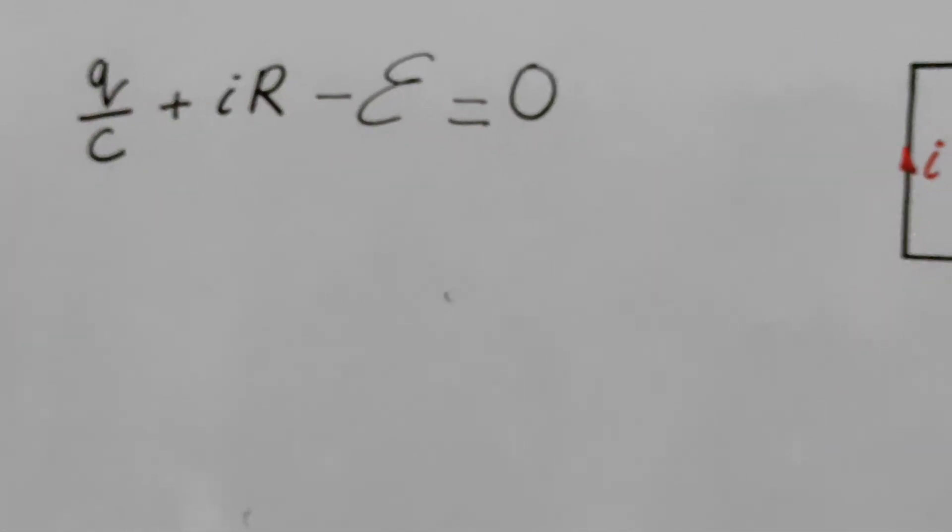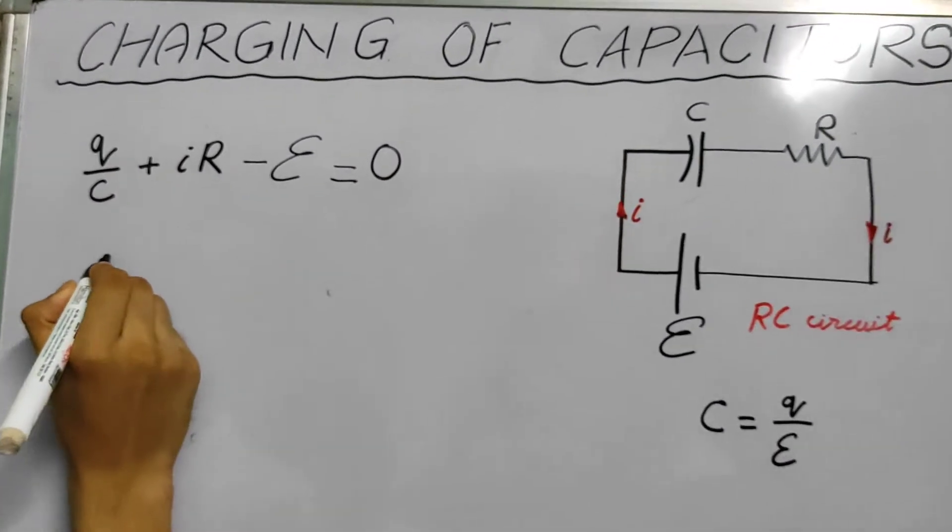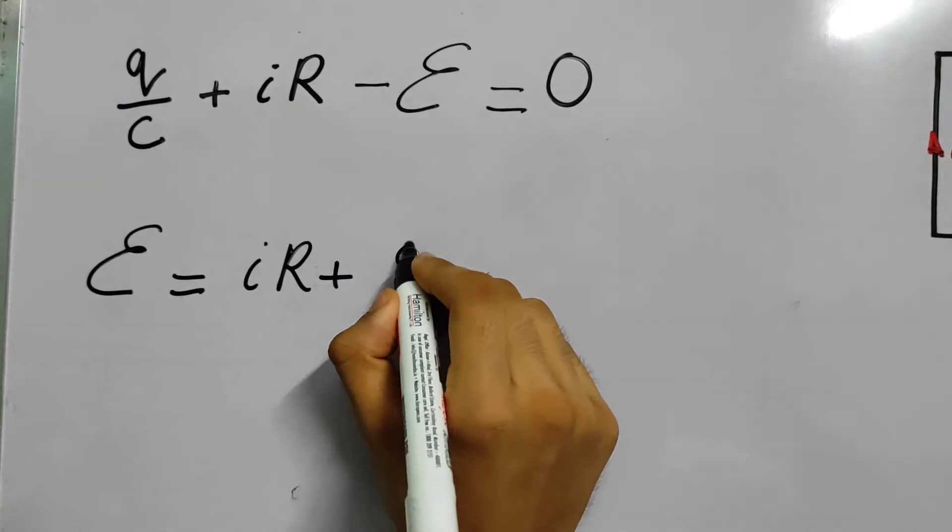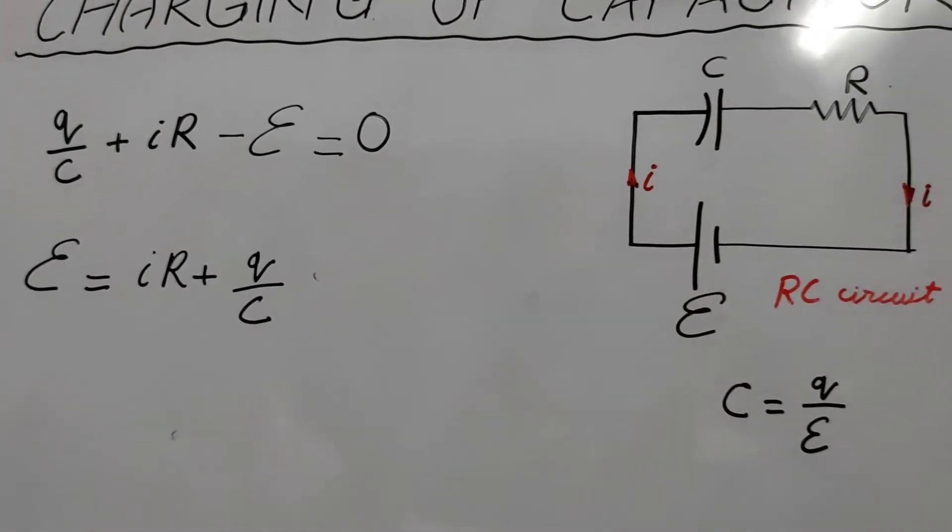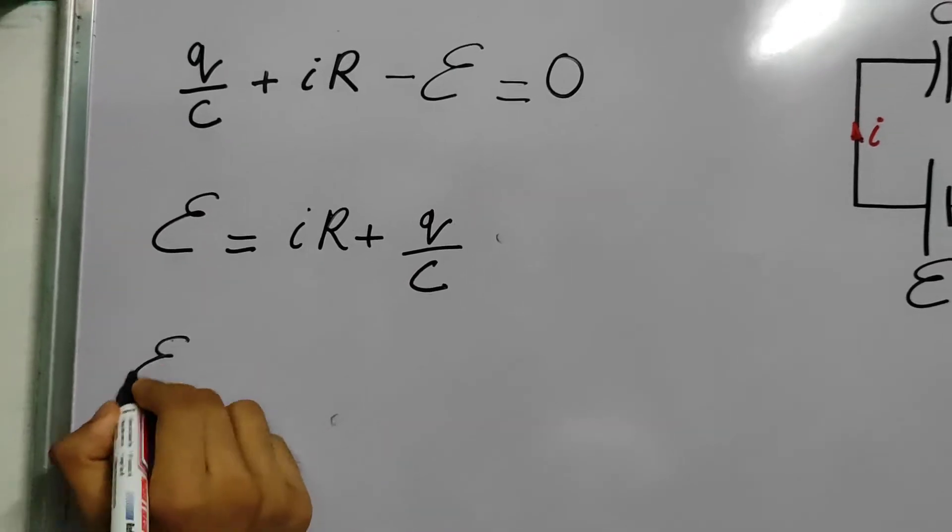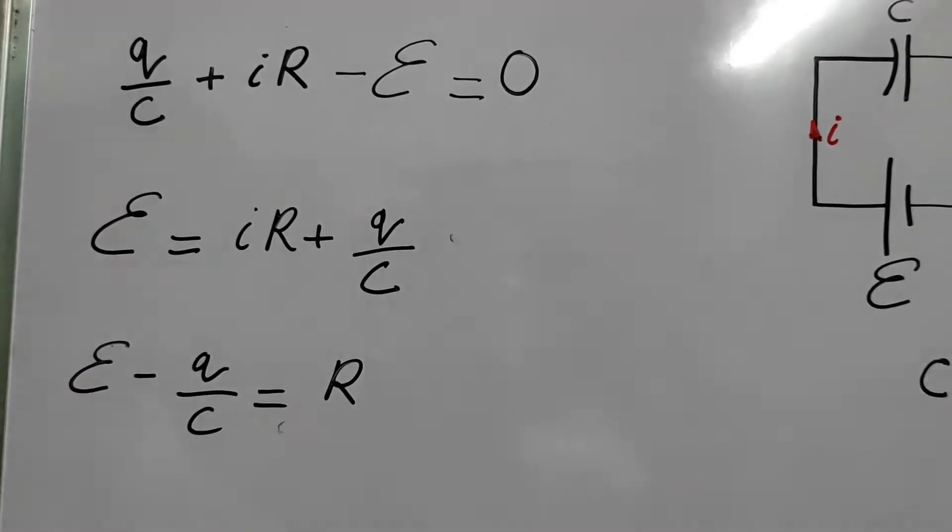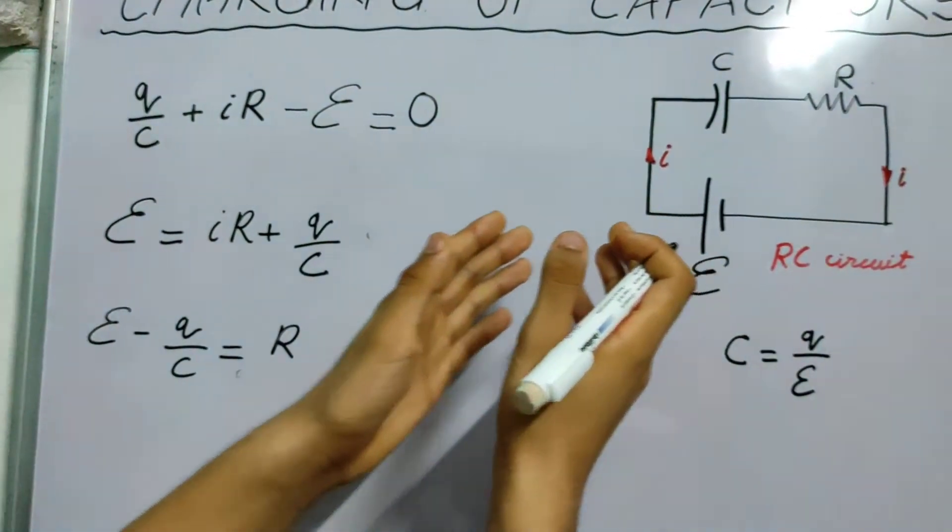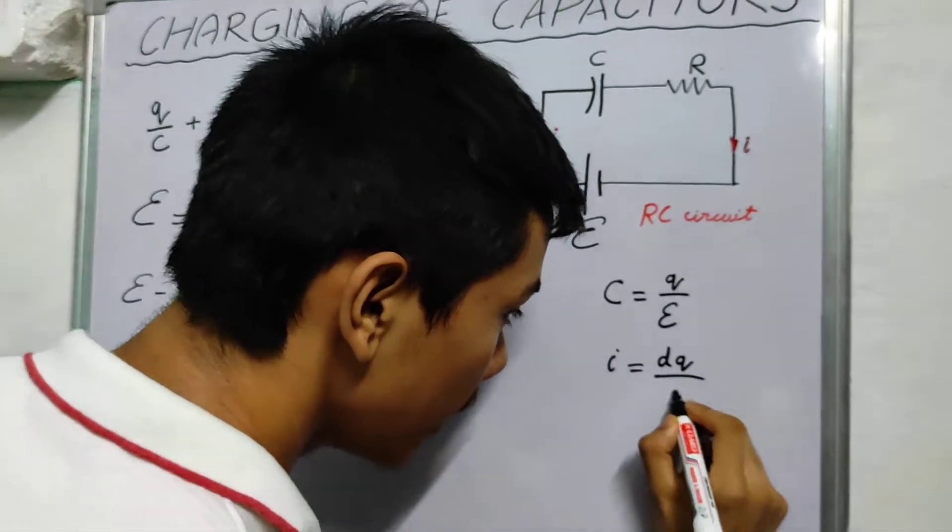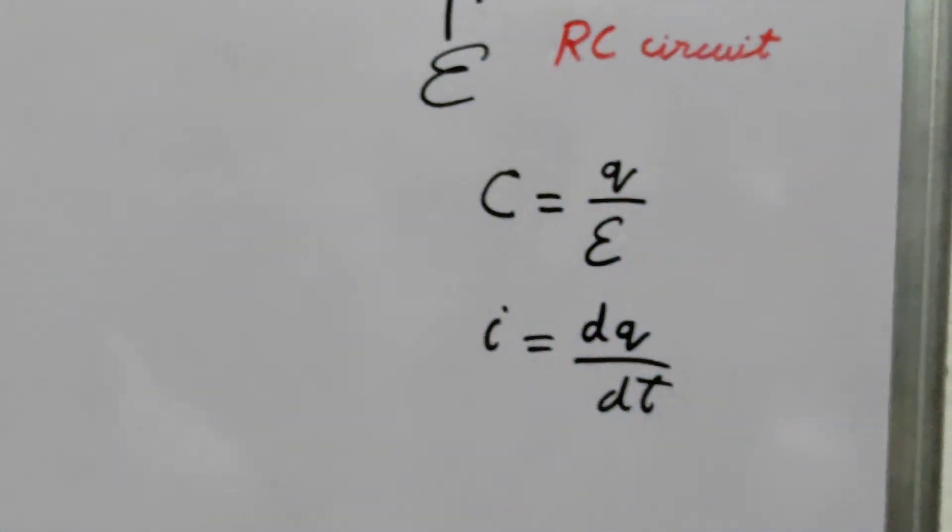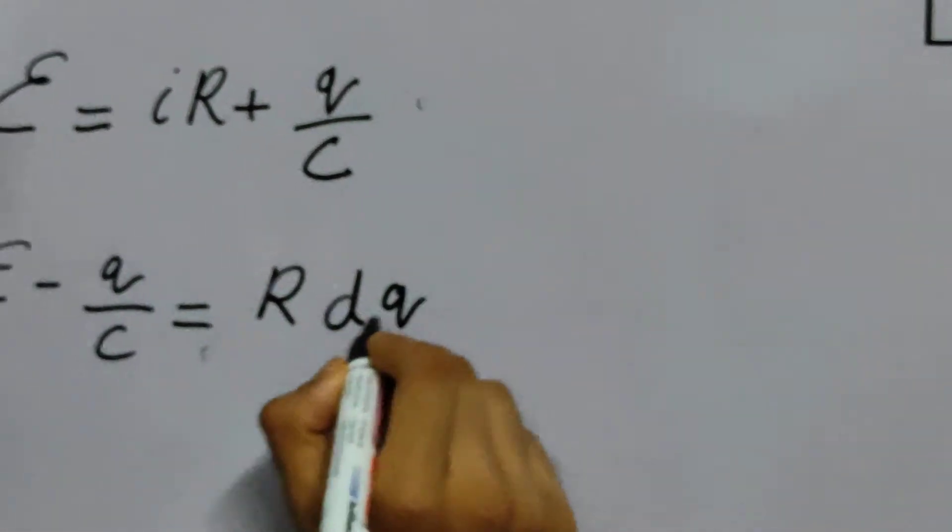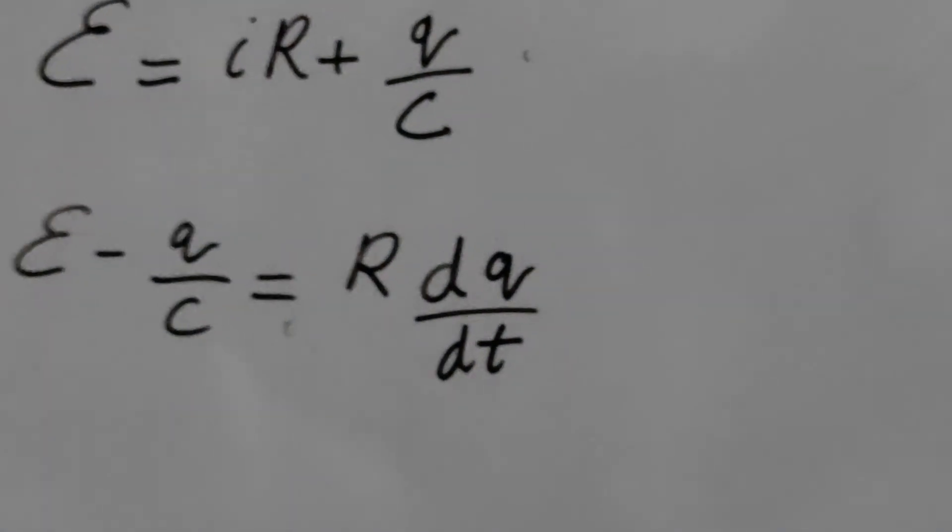We can rearrange this. We can say that E is IR plus Q by C. We can say that E minus Q by C is R times what is current. We need to somehow relate current to the charge. And that's easy. We know current is DQ by DT. Right. How does charge change with respect to time? And it's changing continuously. So we write DQ by DT. That's I. We can write R DQ by DT.